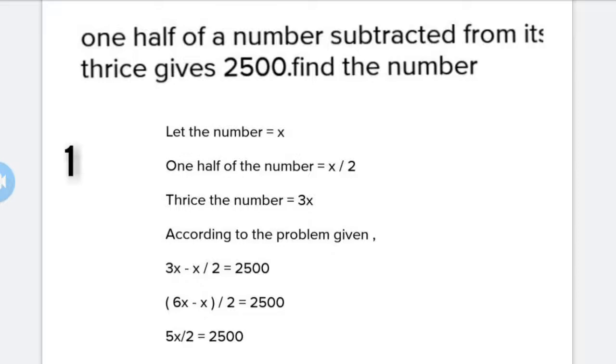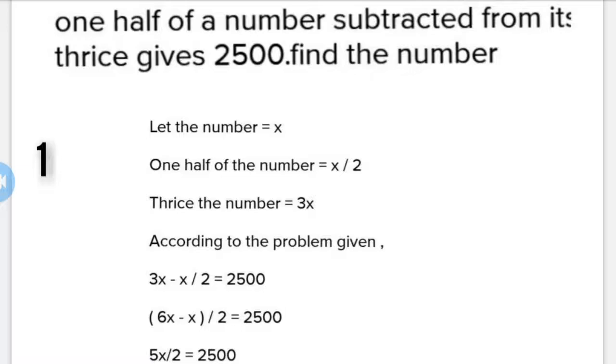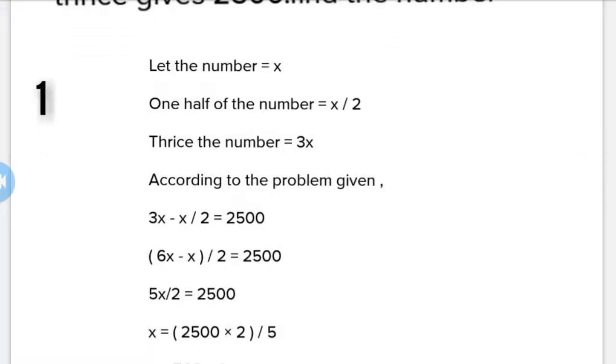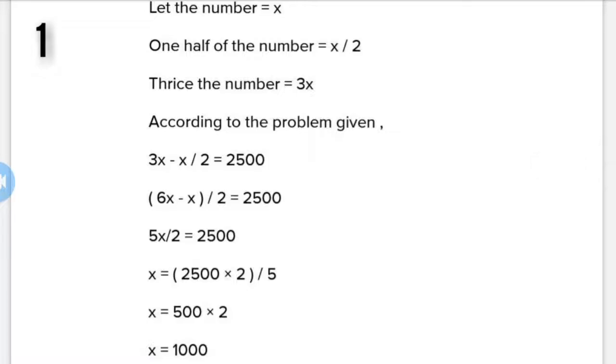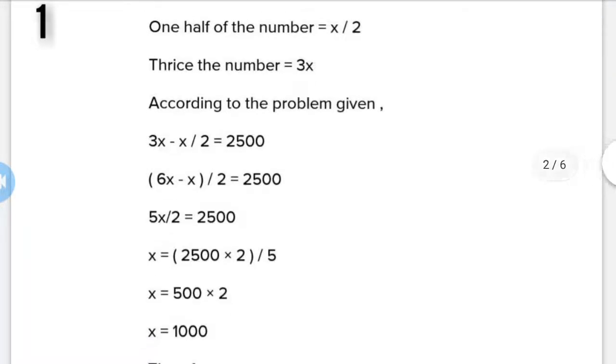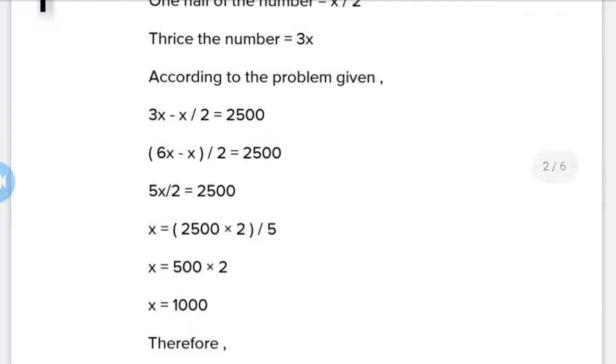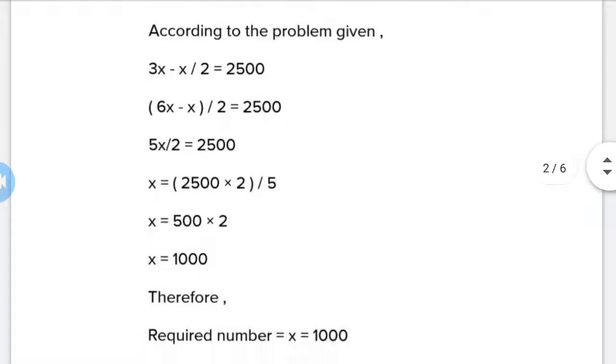Solving the equation, it becomes (6x - x)/2 = 2500, which simplifies to 5x/2 = 2500. Cross-multiplying, we get x = 2500 × 2/5. This gives us 500 × 2, so x = 1000. Therefore, the required number is 1000.